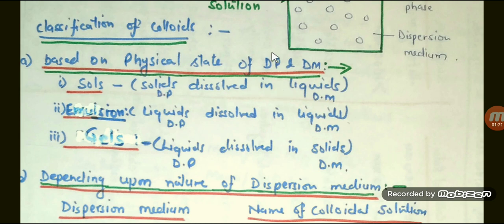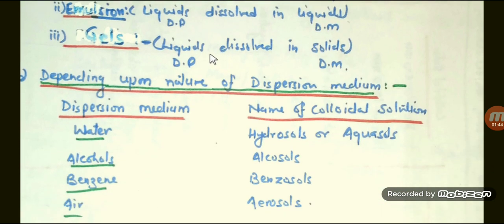Second is emulsions. In emulsions, the disperse phase is liquid and dispersion medium is also liquid. The third type is gels. In gels, the disperse phase is liquid and the dispersion medium is solid.